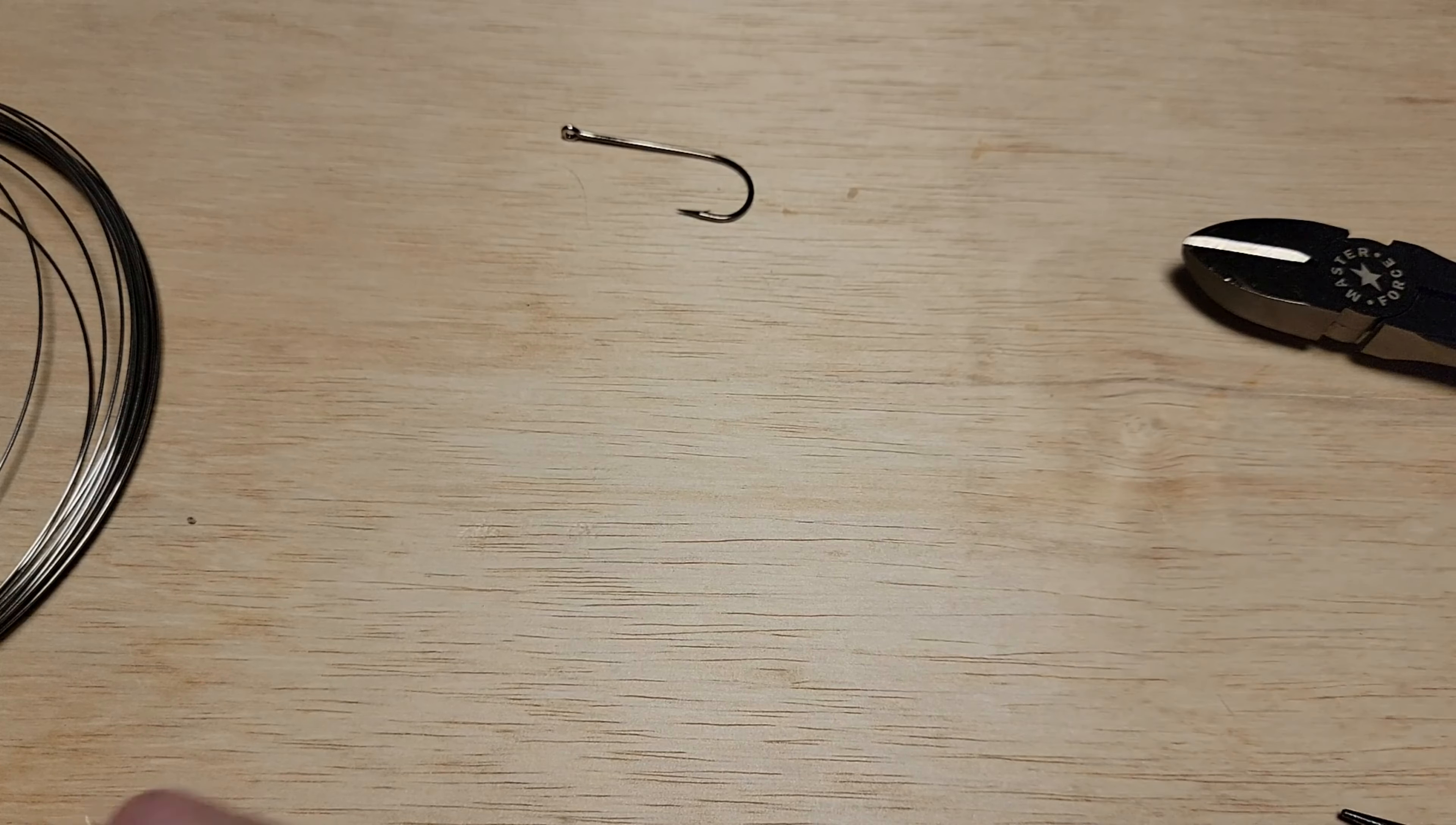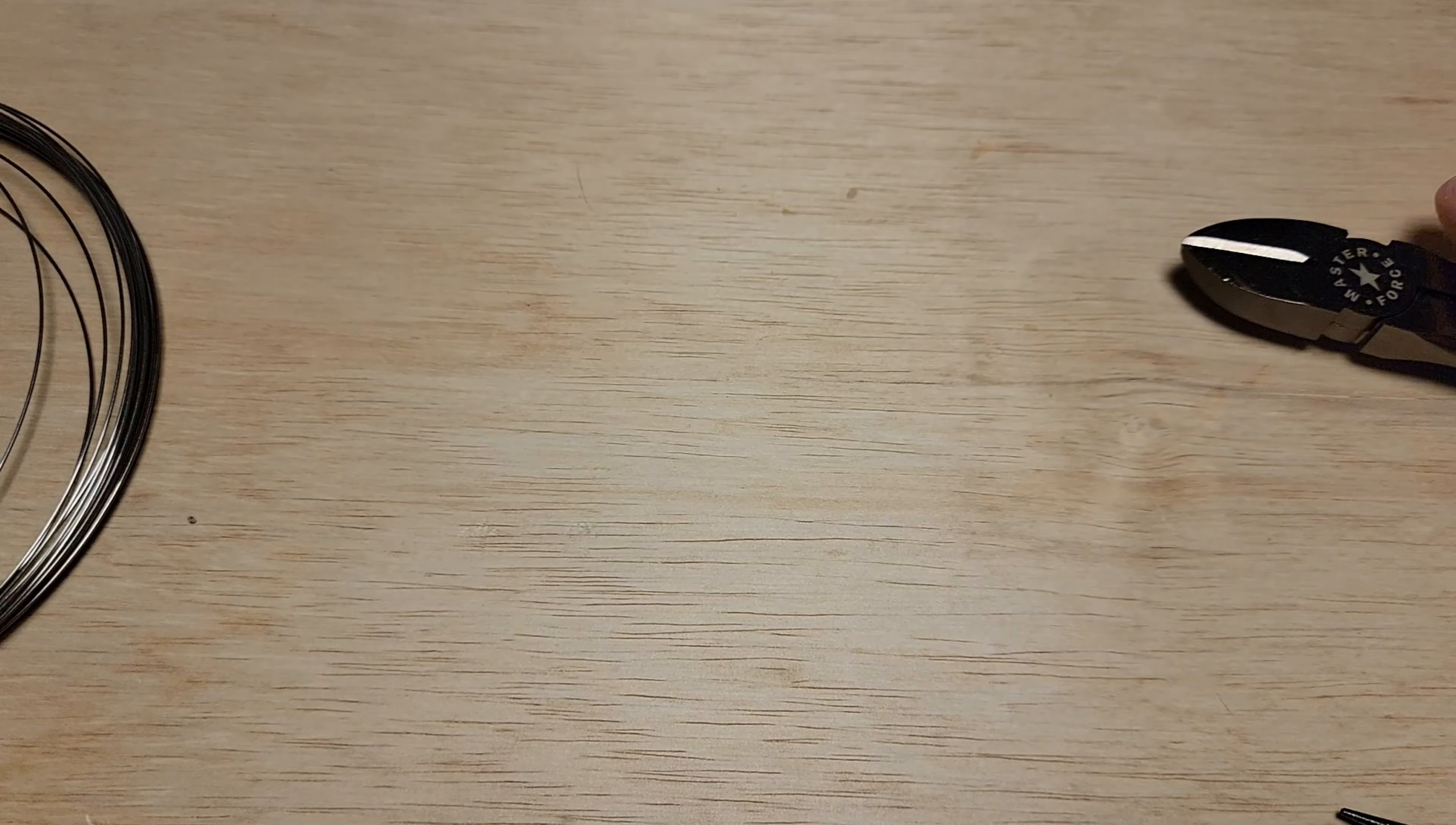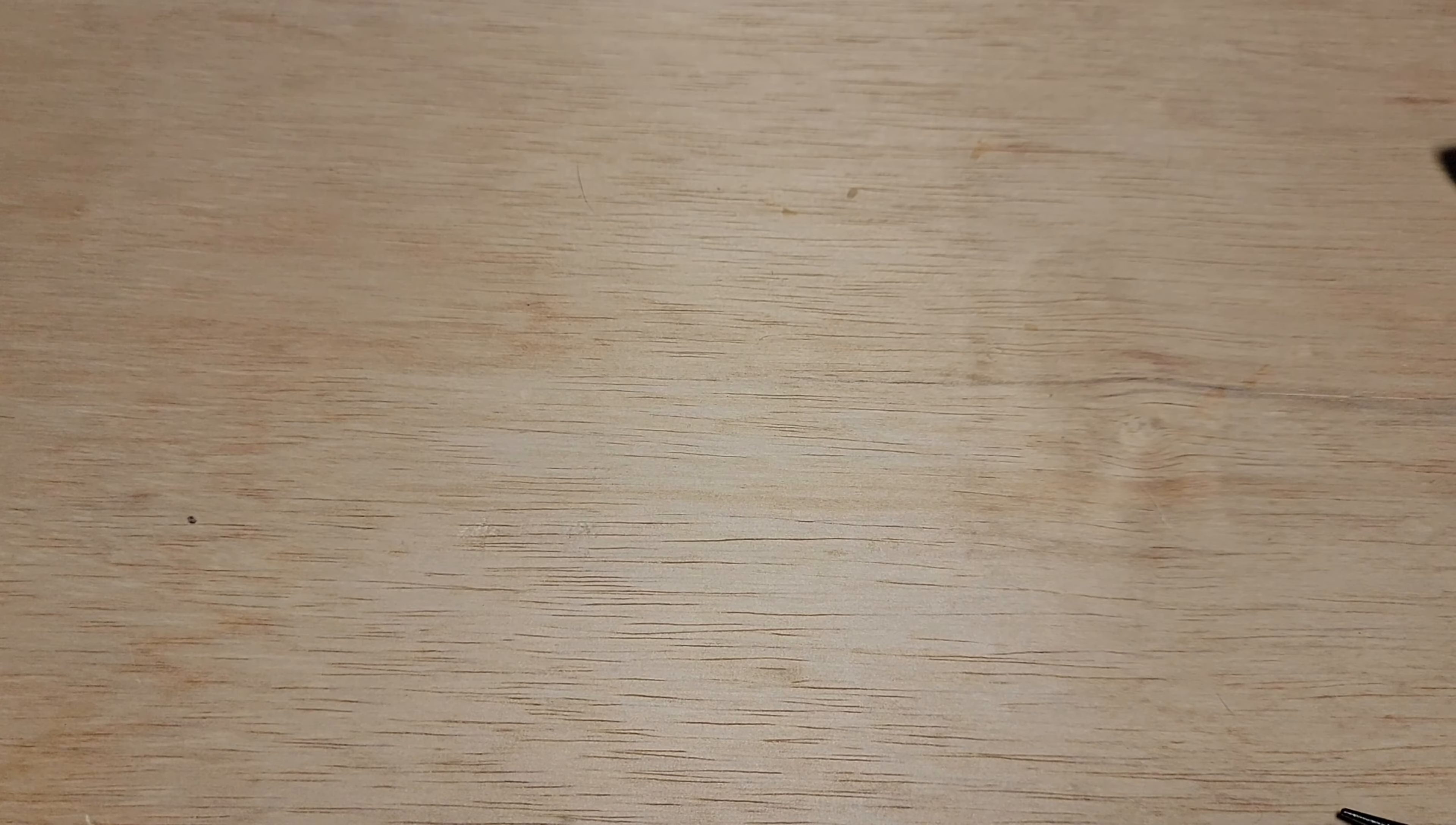Method number two for a treble hook. Let me make a round loop and get this out of the way because the camera keeps trying to focus on it. If you've ever changed treble hooks on a crankbait, you know what this is - the dreaded split ring.